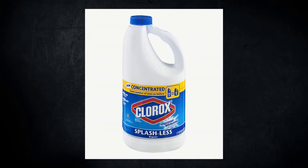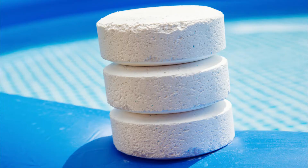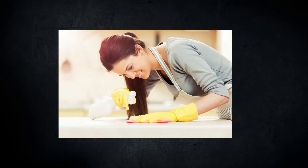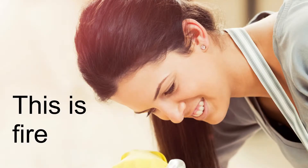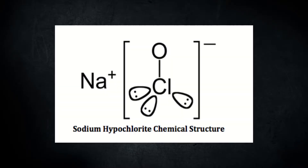Bleach is a chemical substance created from mixing sodium, chlorine, and oxygen, which creates a very effective cleaning and disinfecting product found in daily households. Chemical-wise, bleach is an ionic compound because hypochlorite ions easily connect to sodium ions.